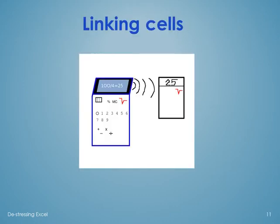This cartoon shows one calculator chatting to another: 100 divided by 4 is 25, and then in the right-hand calculator's answer box is the number 25. This is the feature to Excel's success — the calculators can see each other's results. In Excel it's called linking. And one other thing: the calculators are called cells, so the whole process is called linking cells.